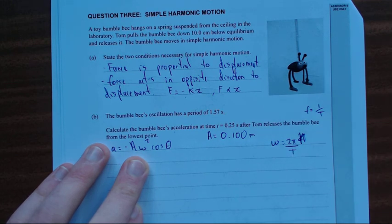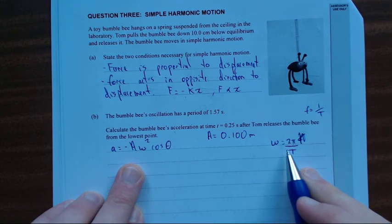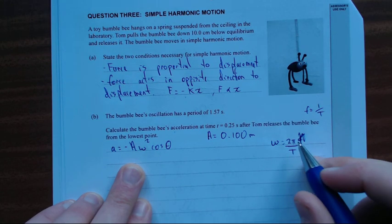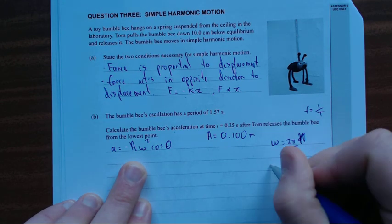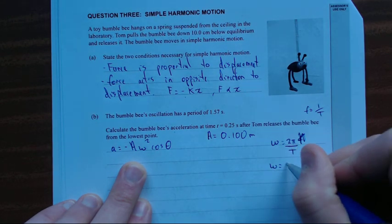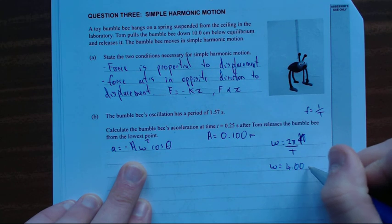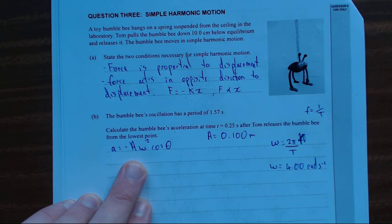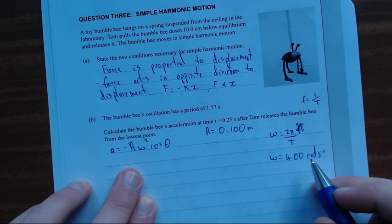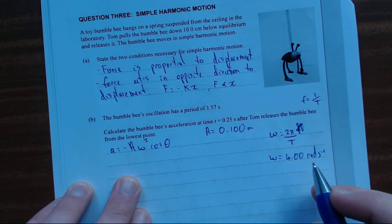So I'm going to substitute in the frequency as 1 over the period, divided by T. We can work that out. If you plug that into a calculator, 2π divided by the period 1.57, that gives you 4.00 radians per second to 3 significant figures. But if you're doing the exam, you probably shouldn't round to 3 sig figs straight away. Keep it saved on your calculator with all the sig figs you want and continue it through the calculation.